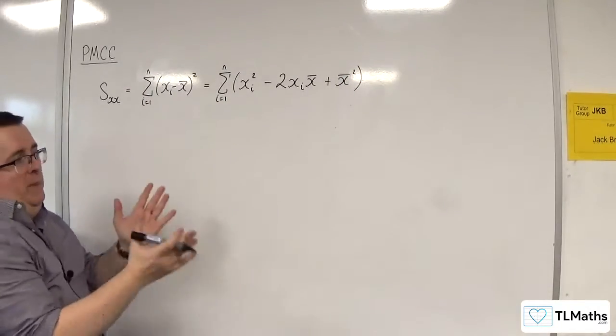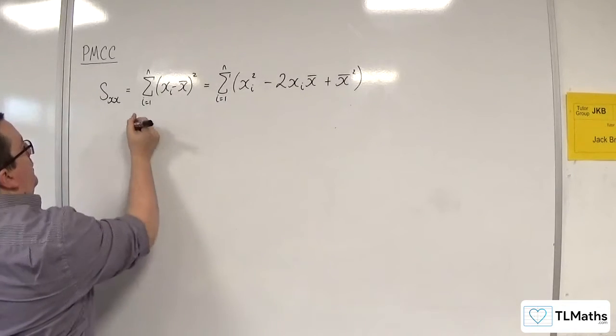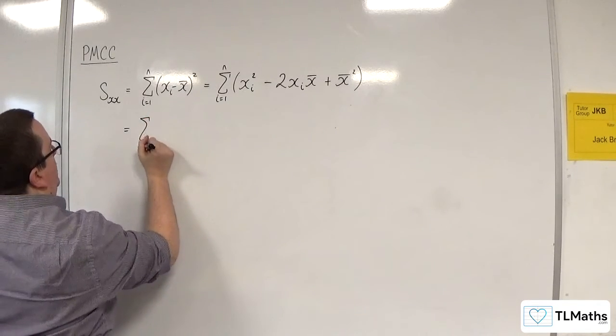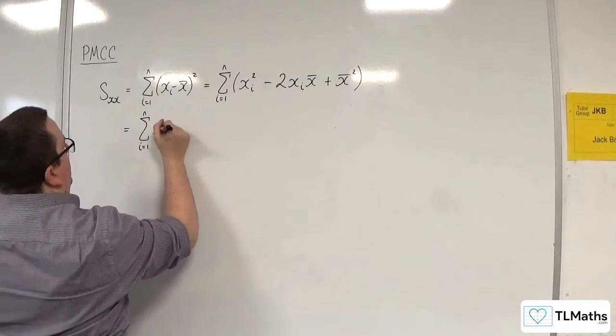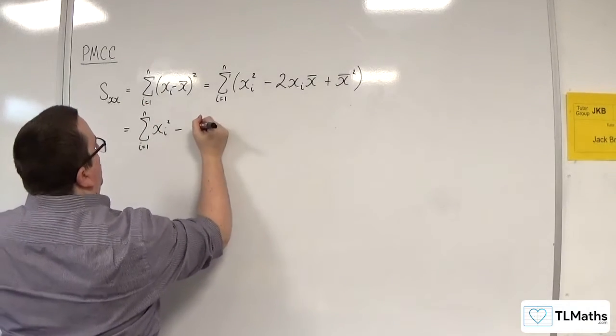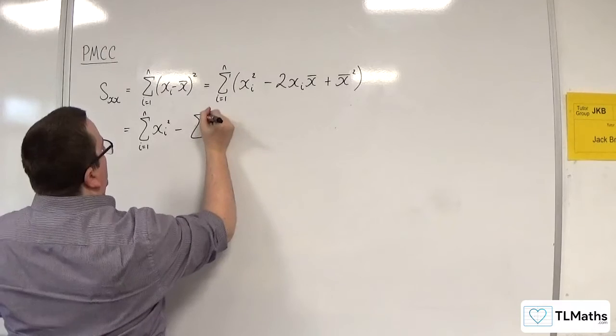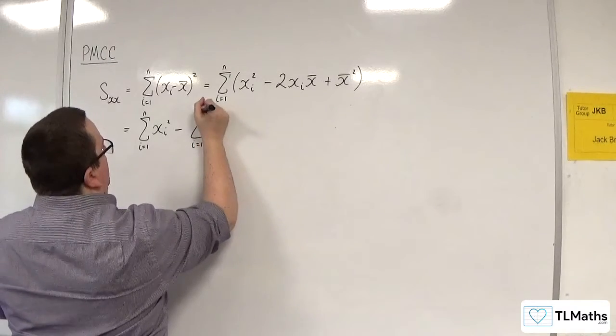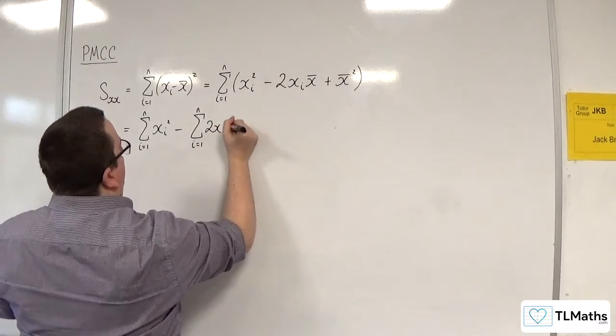I now want to split that up into three summations. So the sum from i is 1 to n of XI squared take away the sum from i is 1 to n of 2XIX bar.